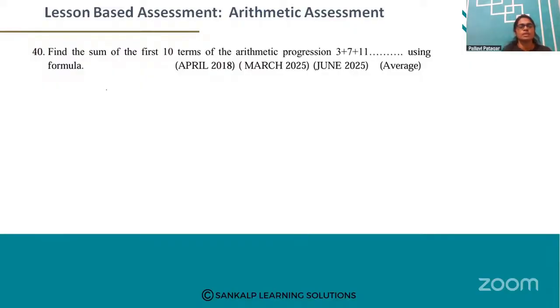In the arithmetic progression, the first term A is equal to 3, and the common difference D is equal to A2 minus A1. 7 minus 3 is equal to 4. The number of terms N is equal to 10.